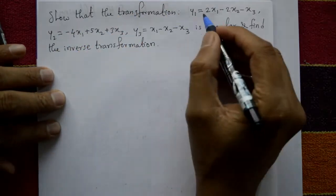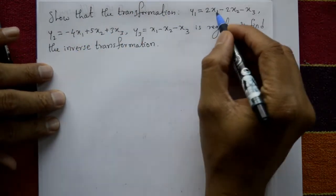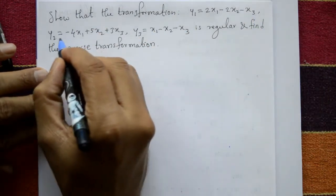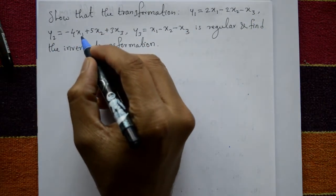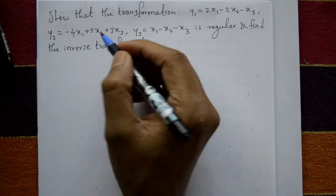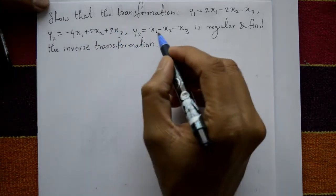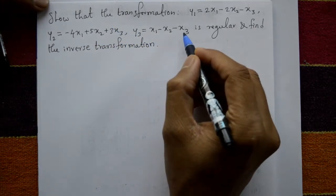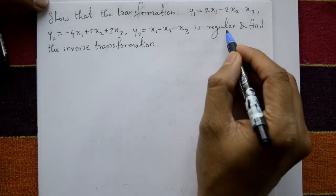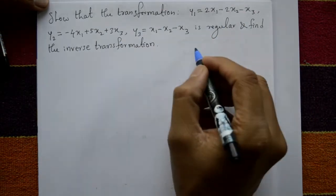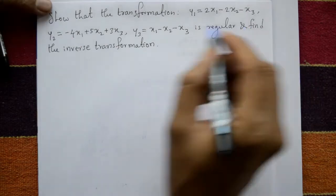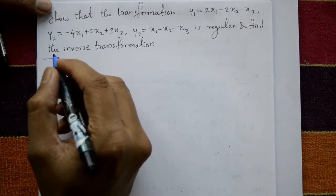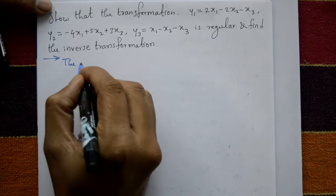Show that the transformation y1 = 2x1 - 2x2 - x3, second equation y2 = -4x1 + 5x2 + 3x3, and y3 = x1 - x2 - x3 is regular and find the inverse transformation. First we show it is regular, then find the inverse transform. Solution: